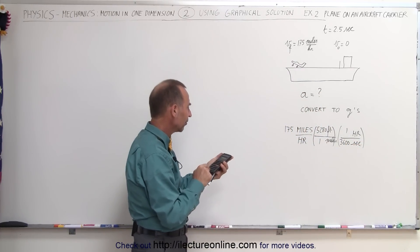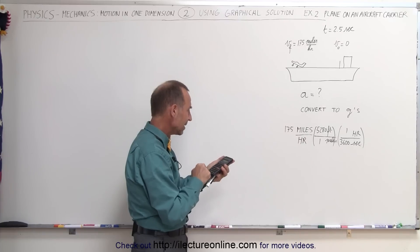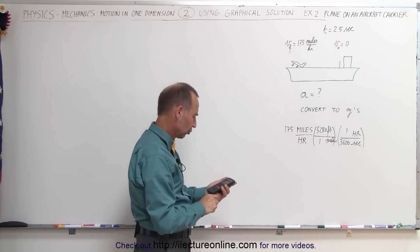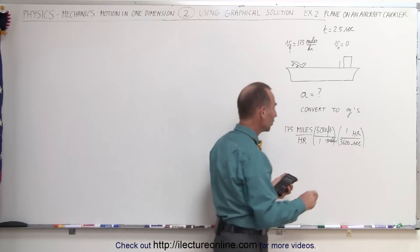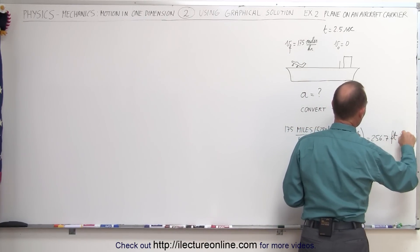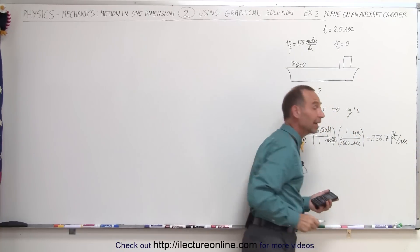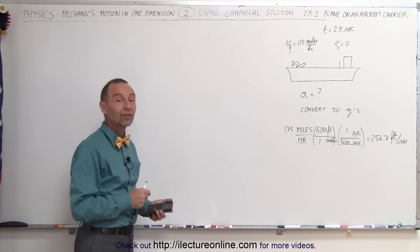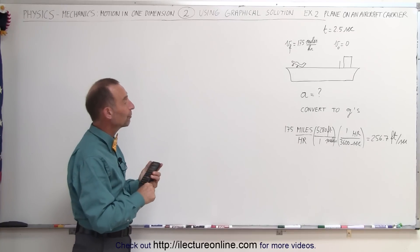So we have 175 times 5,280 divided by 3,600 and we get 256.7. That would be feet per second. So that airplane accelerates from zero to 256.7 feet per second in 2.5 seconds.